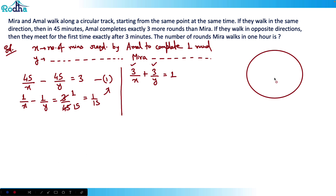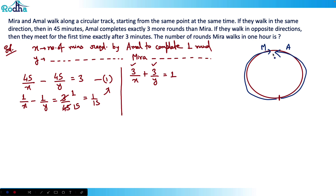If they are moving in opposite directions and meet for the first time after three minutes, that means the distance covered by Amal plus the distance covered by Mira equals exactly one full round. So 3/x + 3/y = 1, which gives us Equation 2: 1/x + 1/y = 1/3.